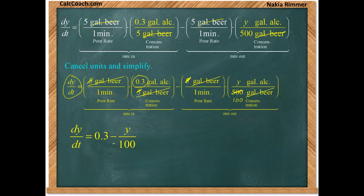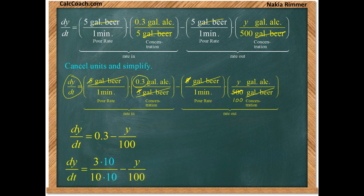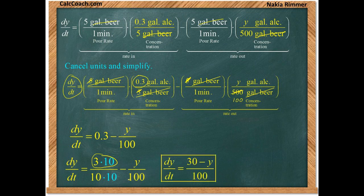The fives cancel each other out, and then this five can turn this 500 into 100. We'll have exactly what we need in a nice format. We'll have dy/dt is 0.3 gallons of alcohol per minute minus y over 100 gallons of alcohol per minute. What we're going to do is combine this to one fraction. 0.3 is 3 over 10. Common denominator would be 100, so we times by 10 both numerator and denominator, and we get (30 - y) over 100. That's what dy/dt is. This is our differential equation that we are charged to solve.